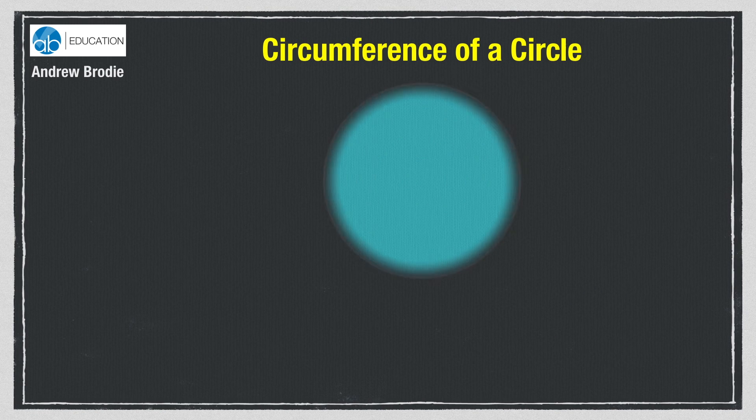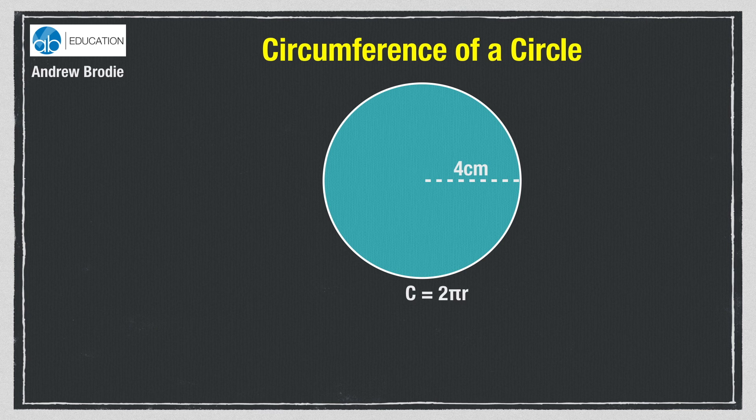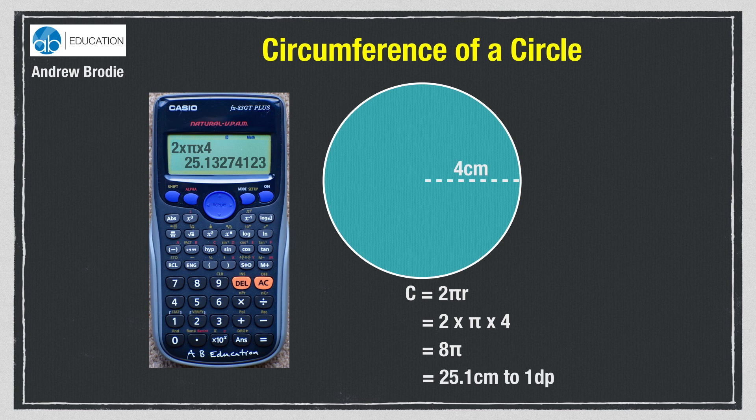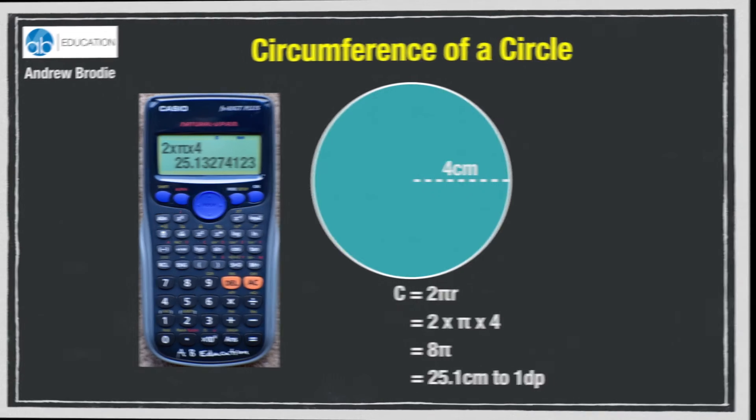Here's another example. This time we can see that the radius is 4cm, so we are going to use the formula C equals 2πr. We need to type into the calculator 2 times pi times 4 and press equals. Again we may get the answer in terms of pi, so just press the SD button to get 25.13274123, which rounds to 25.1 to one decimal place. So the circumference of the circle is 25.1cm to one dp.